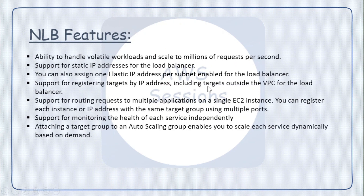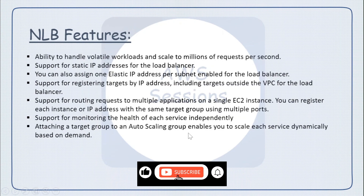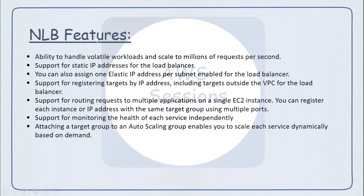Some important features related to NLB: it is able to handle volatile workloads and can scale up to millions of requests per second. It supports static IP or you can assign one Elastic IP per subnet. You can register IPs as targets — IPs can belong to inside the VPC or outside VPC. It supports routing requests to multiple applications on a single EC2 instance, supports health checks, and if you add a target group to an Auto Scaling group, it can dynamically scale based on demand.